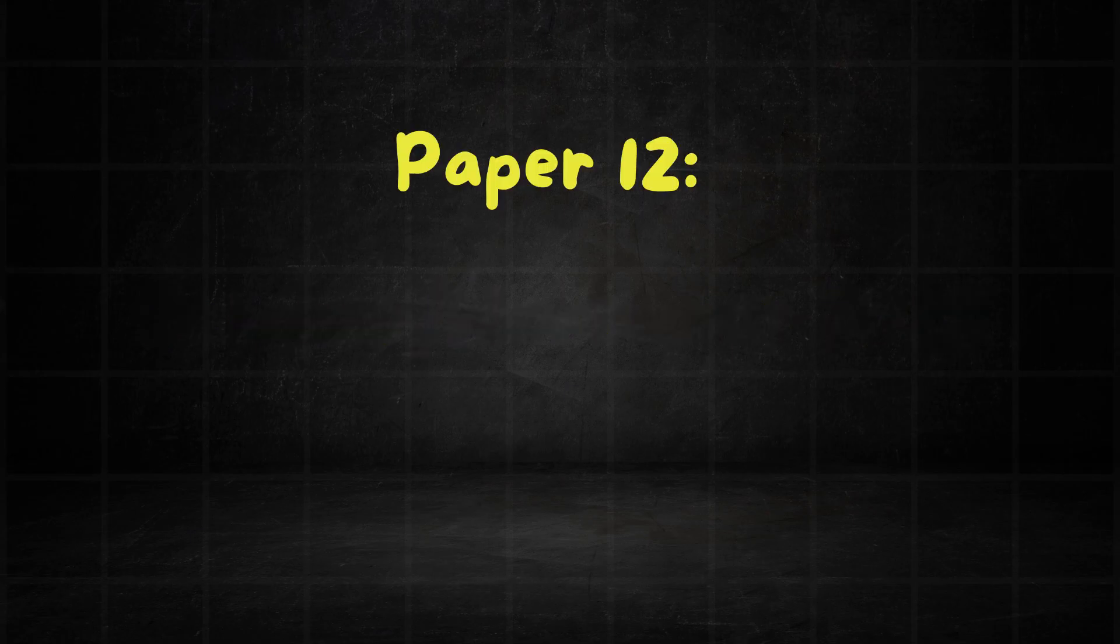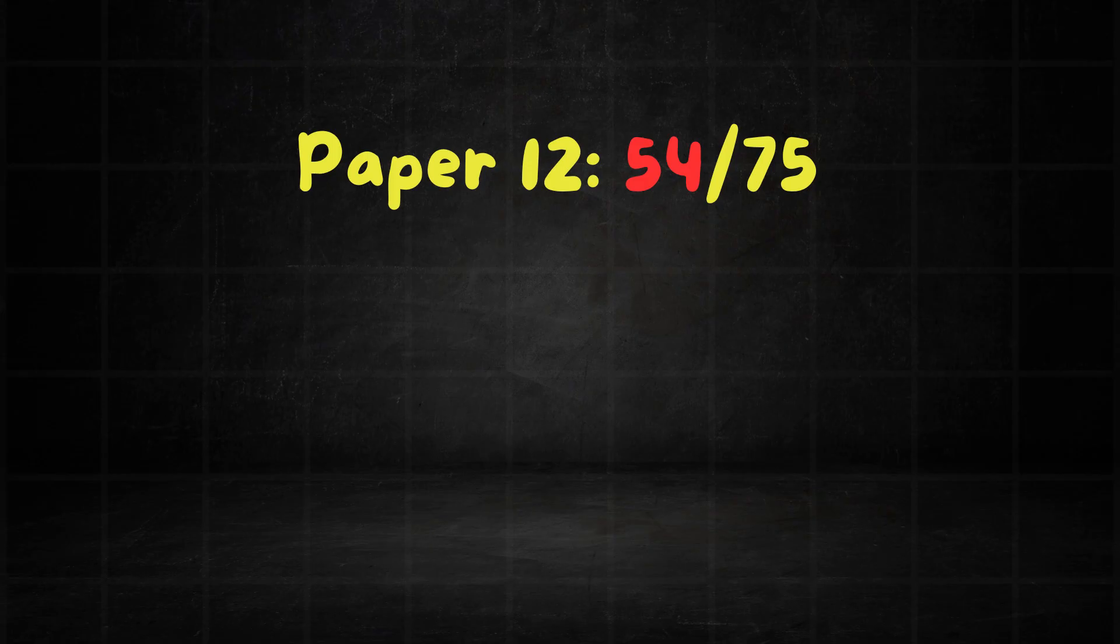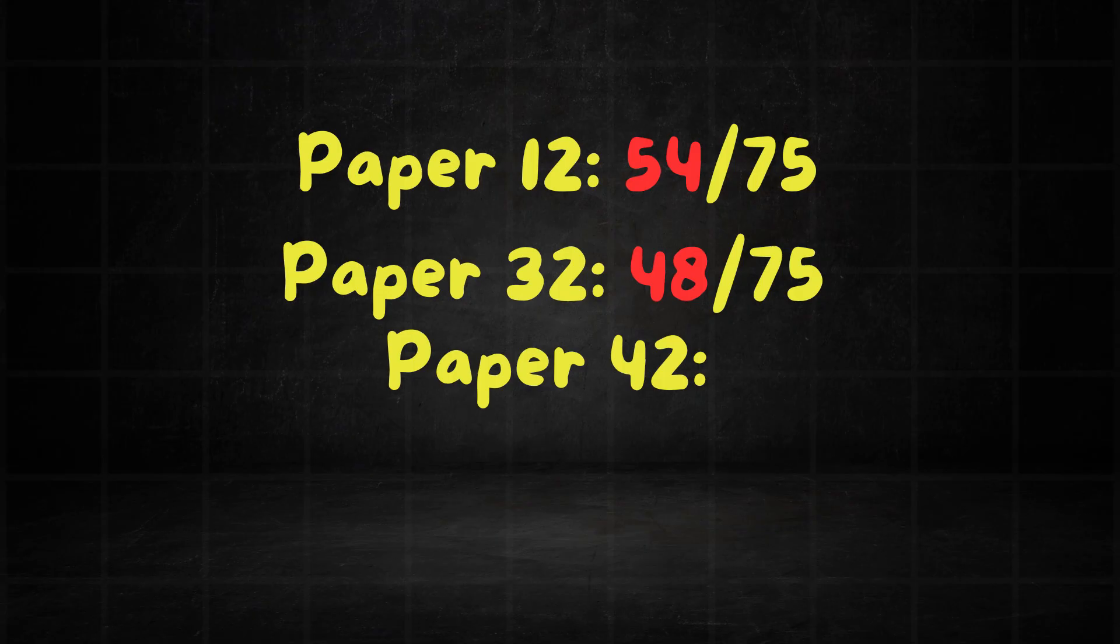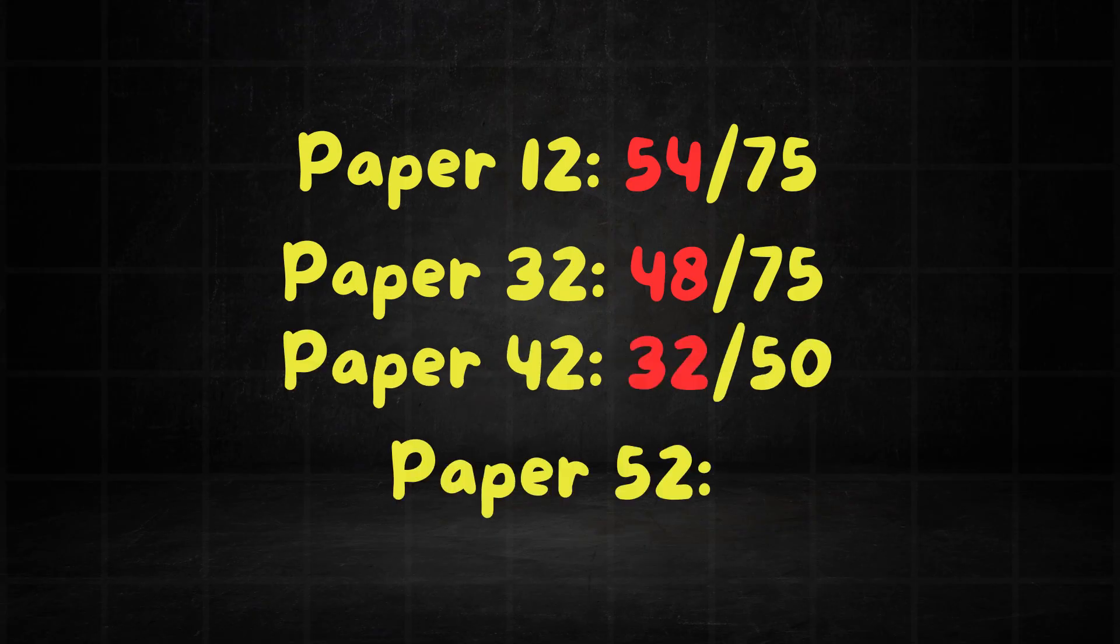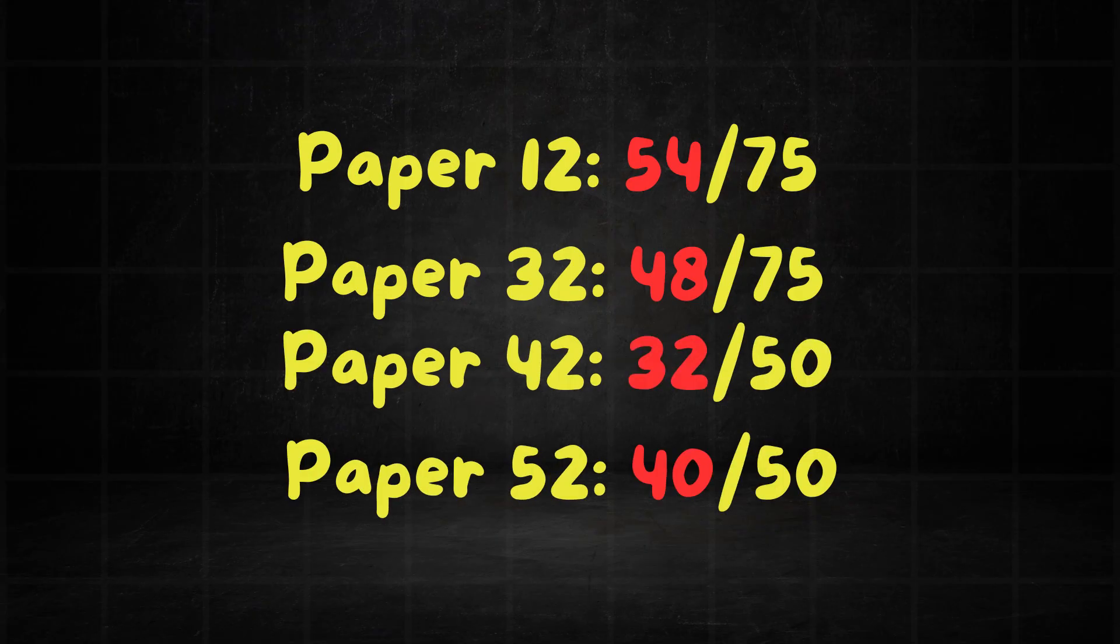For paper 12, that's the pure 1 paper, Bob got 54 out of 75. For paper 32, Bob got 48 out of 75. For paper 42, Bob got 32 out of 50. For paper 52, Bob got 40 out of 50.